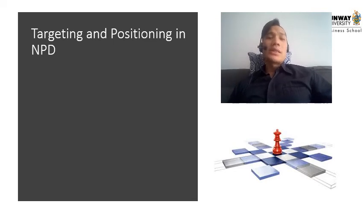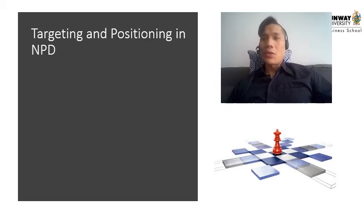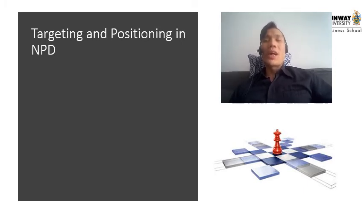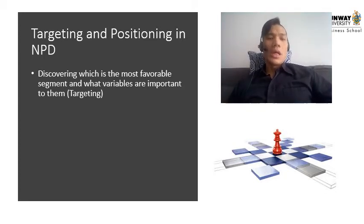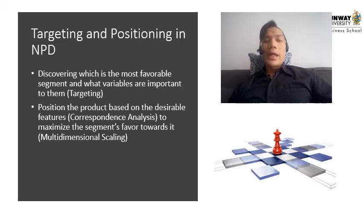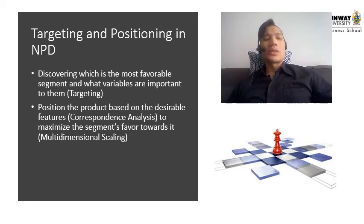Once we understand the NPD stages, we can look at the product features that consumers say they like and position the product so consumers feel more connected to it, increasing the probability of purchase. This is where targeting and positioning come in — discovering the most favorable segments for the product launch and what product characteristics are important to them. We can then position the product using correspondence analysis to maximize segment favor, using what is called multi-dimensional scaling.